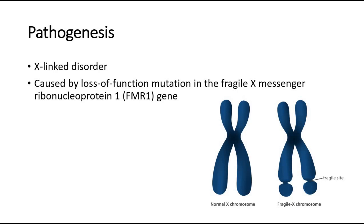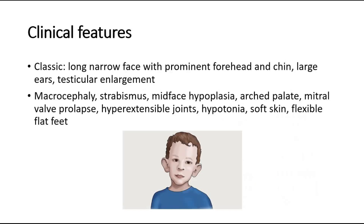This picture shows a normal X chromosome and a Fragile X chromosome — you can see the fragile site. The clinical features of Fragile X Syndrome vary depending upon the mutation state — full mutation versus pre-mutation — as well as gender and tissue variation.